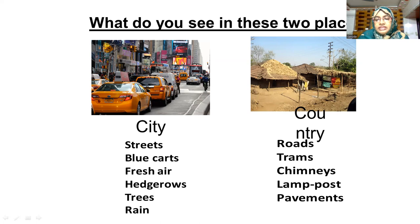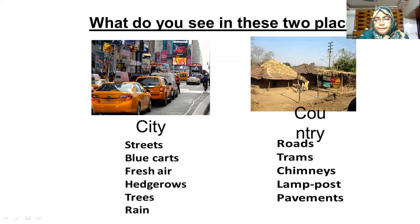We can see the opposite elements in the city and the opposite elements in the countryside. The elements of the countryside are streets, blue cars, fresh air, hedgerows, trees and rain. And the elements of the city are roads, trams, chimneys, lamp posts and pavements.